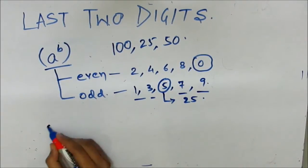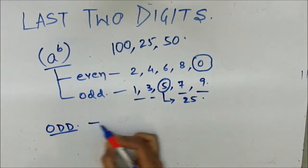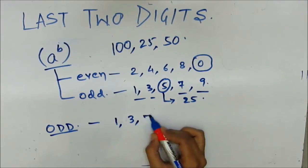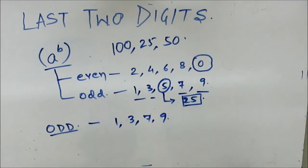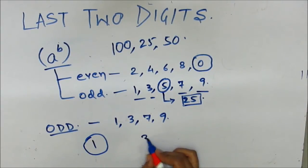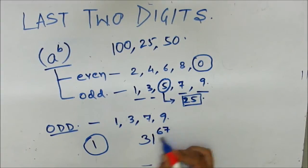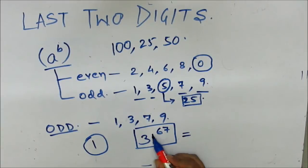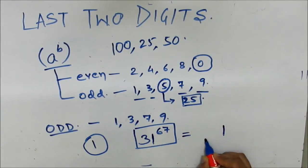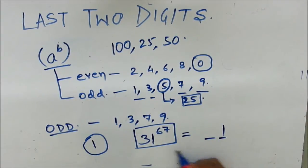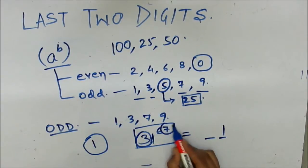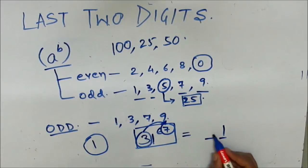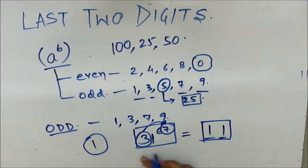For odd numbers, we need to calculate the last two digits for numbers ending with 1, 3, 7, and 9, since for 5 the last two digits will always be 25. For all numbers ending with 1, the last digit will always be 1. Suppose we have to calculate 31 to the power 67. The second last digit can be found by multiplying the tens digit of the base by the exponent: 3 × 7 = 21, so we take 1. Therefore the last two digits of 31^67 are 11.